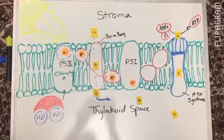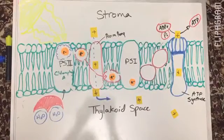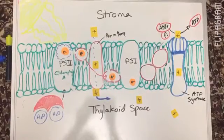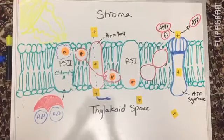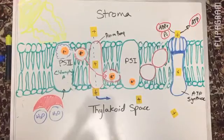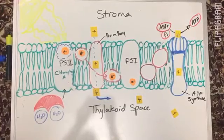As protons pass through ATP synthase, they are phosphorylated with ADP to form ATP and released into the stroma.